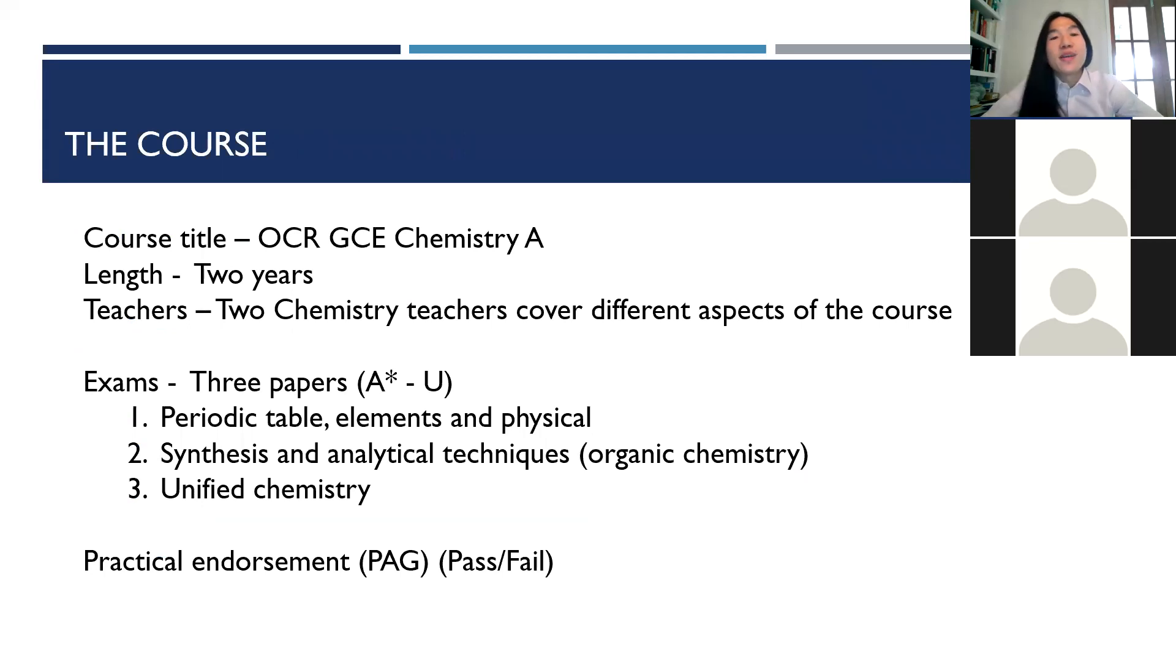So more information about the A Level course itself. So we follow the OCR GCE Chemistry A syllabus, there is a chemistry B, which we don't do, and that's more of a practical based syllabus. The length is two years, you will be taught by two chemistry teachers covering different aspects of the course. The exams will consist of three papers at the end of the two years, and you will get a grade ranging from A star to U.